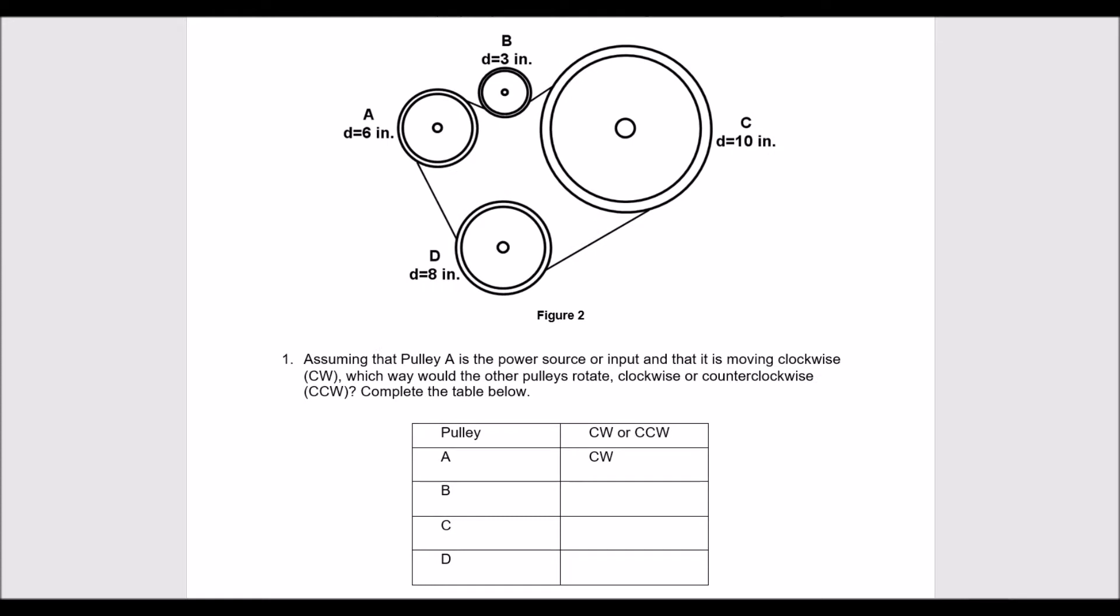We want to know what direction these pulleys are going. So pulley A is going clockwise and pulley A is going in this direction here. So that means the belt is going in this direction, which means it's going to turn this pulley counterclockwise.